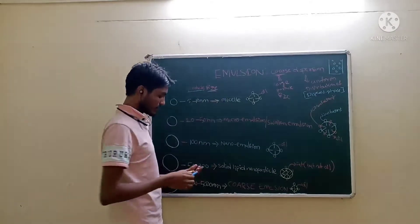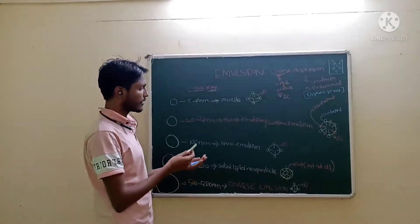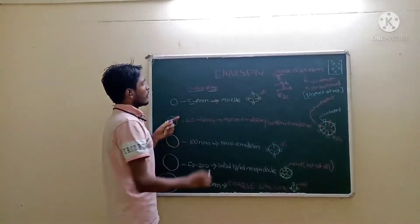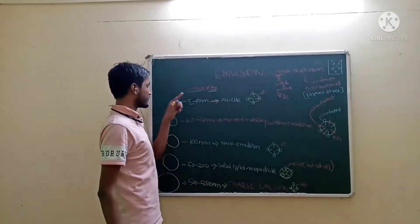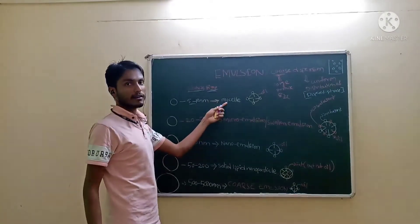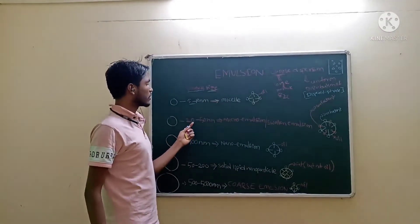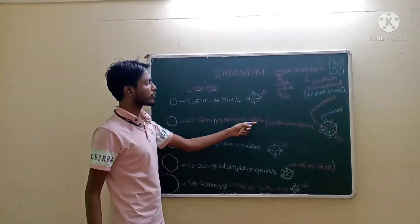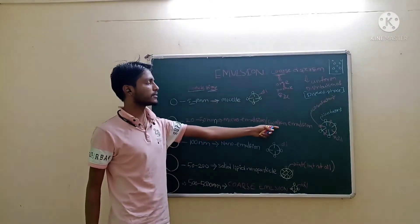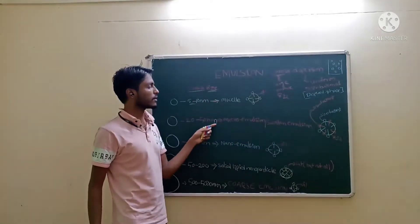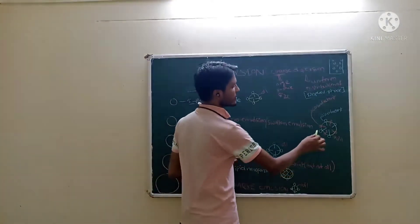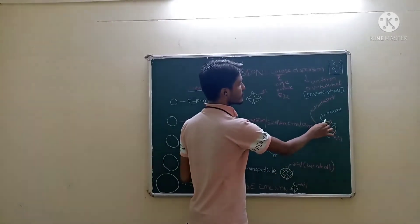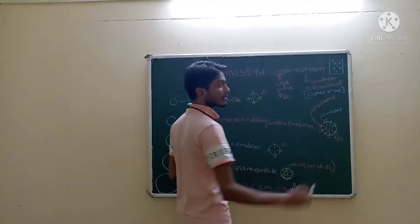Emulsions can be classified depending upon their particle size. From 5 to 10 nanometers, we call it a micelle. From 20 to 50 nanometers, we call it a micro emulsion or swollen emulsion. This micro emulsion has a co-surfactant along with a surfactant.